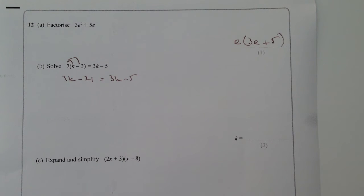Really, it's just a case then of manipulating this equation, so we get k's on one side, and then numbers on the other.